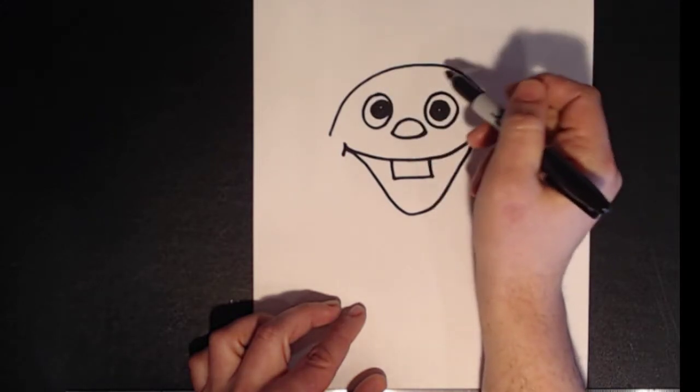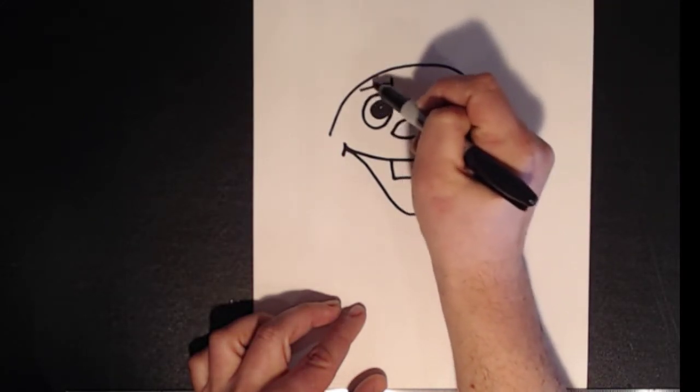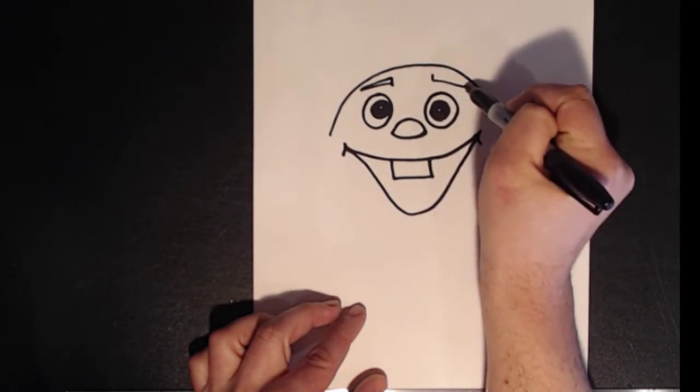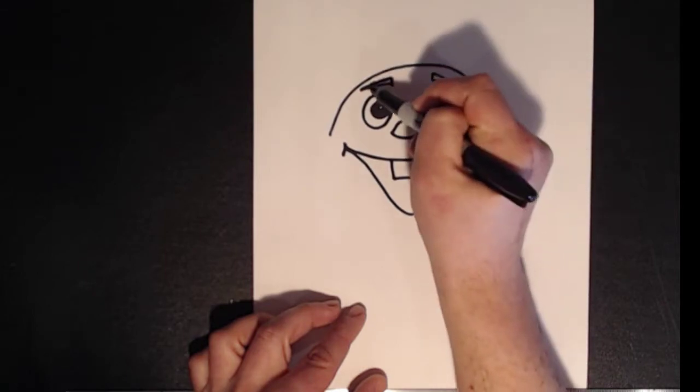All right. Then he has eyebrows. His eyebrows are going to be a little bit wider on the inside than they are on the outside. So it almost ends up being like a triangle. And they are wide on the inside.